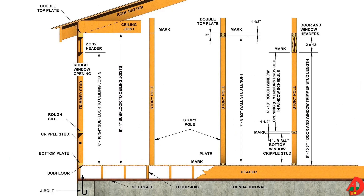Vertical layout is a procedure for calculating the lengths of vertical framing members, making it possible to pre-cut the studs, trimmer studs, and cripple studs required for a building. The most efficient vertical layout procedure involves a wall framing story pole, which is a 1x2 or 1x4 marked to indicate the length of studs, trimmer studs, and cripple studs. A story pole reduces the possibility of making mathematical errors and allows measurements to be retained for future use. Information required to mark a story pole is taken from wall section views, door and window schedules, and door and window details shown on the prints.